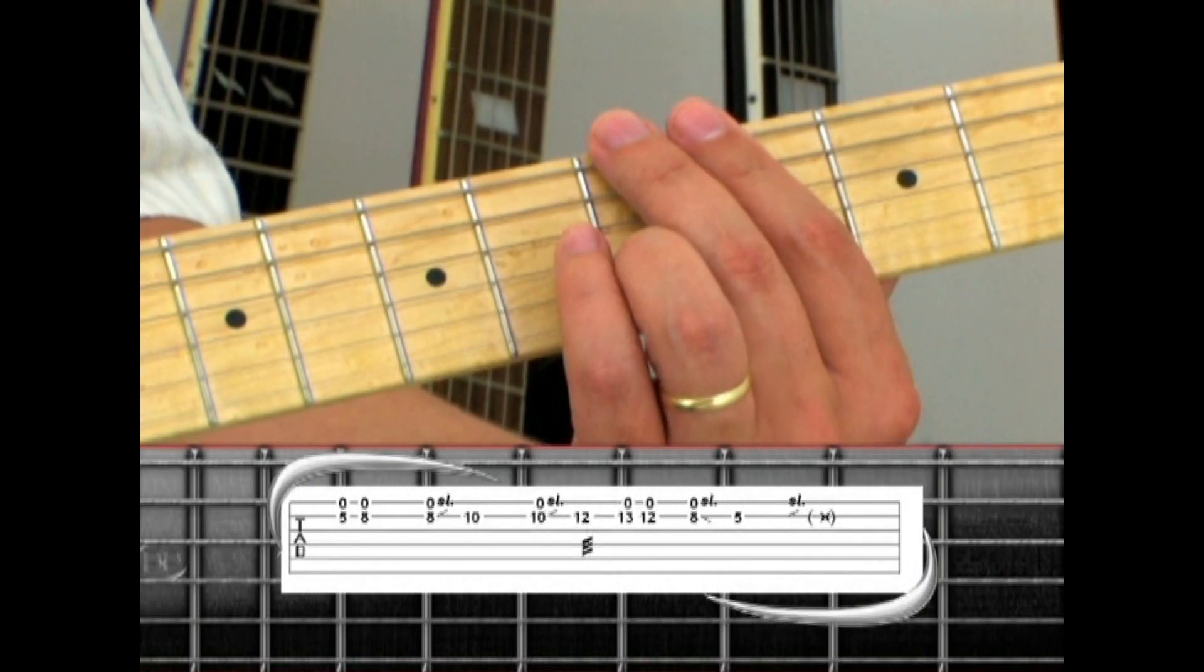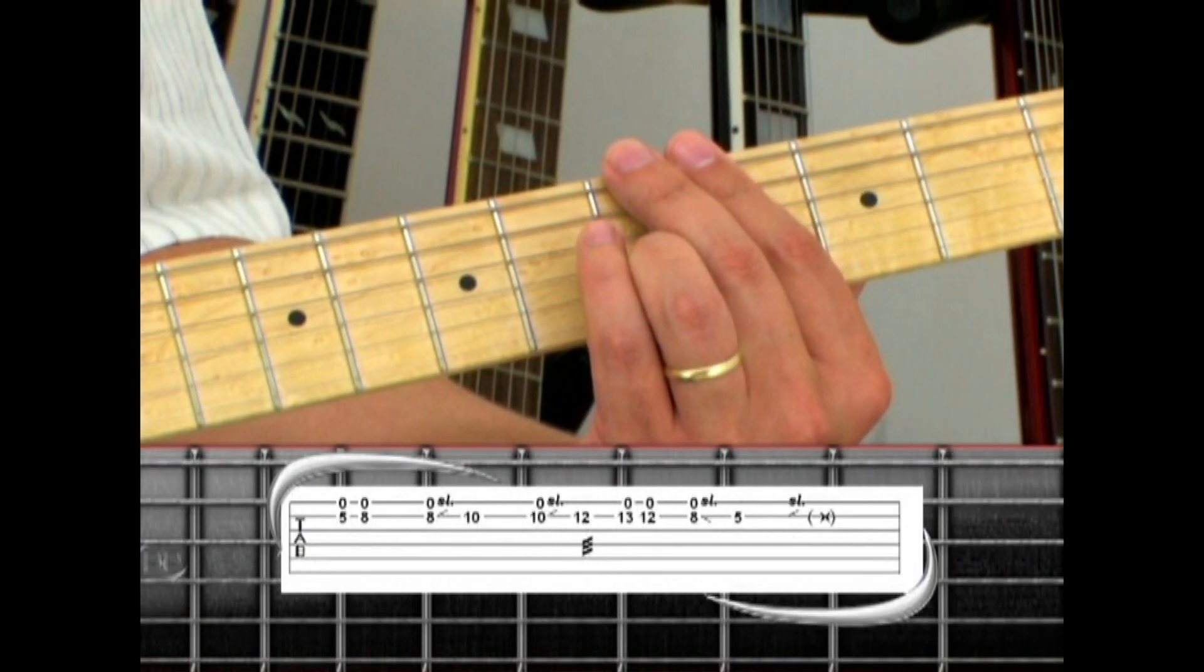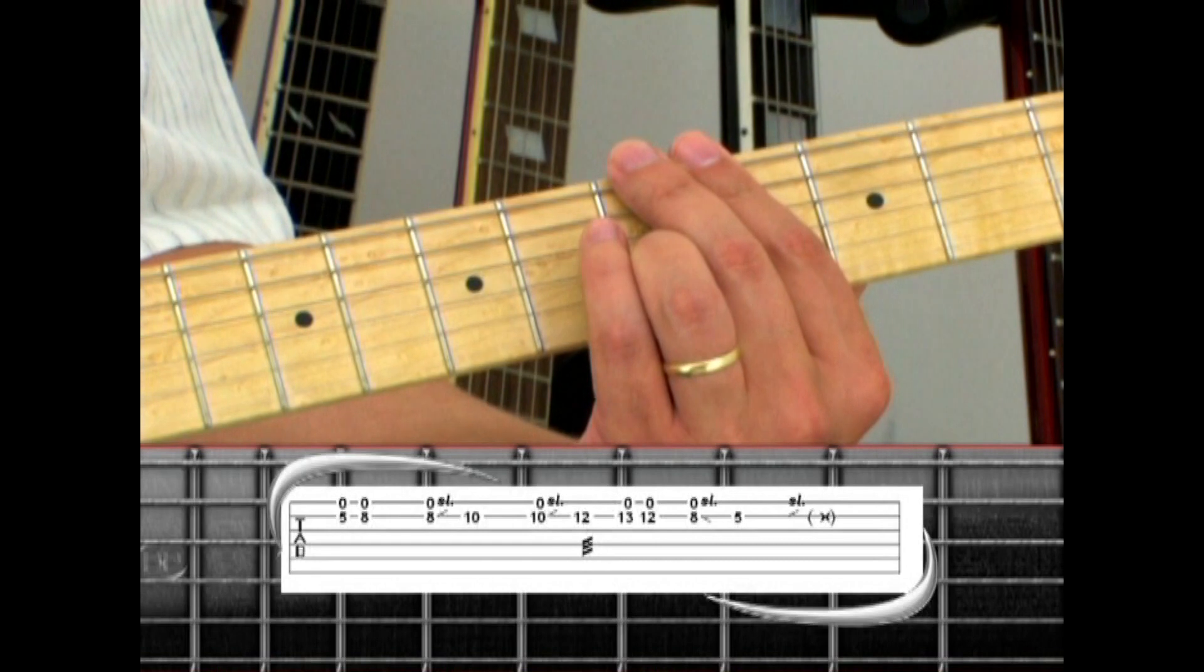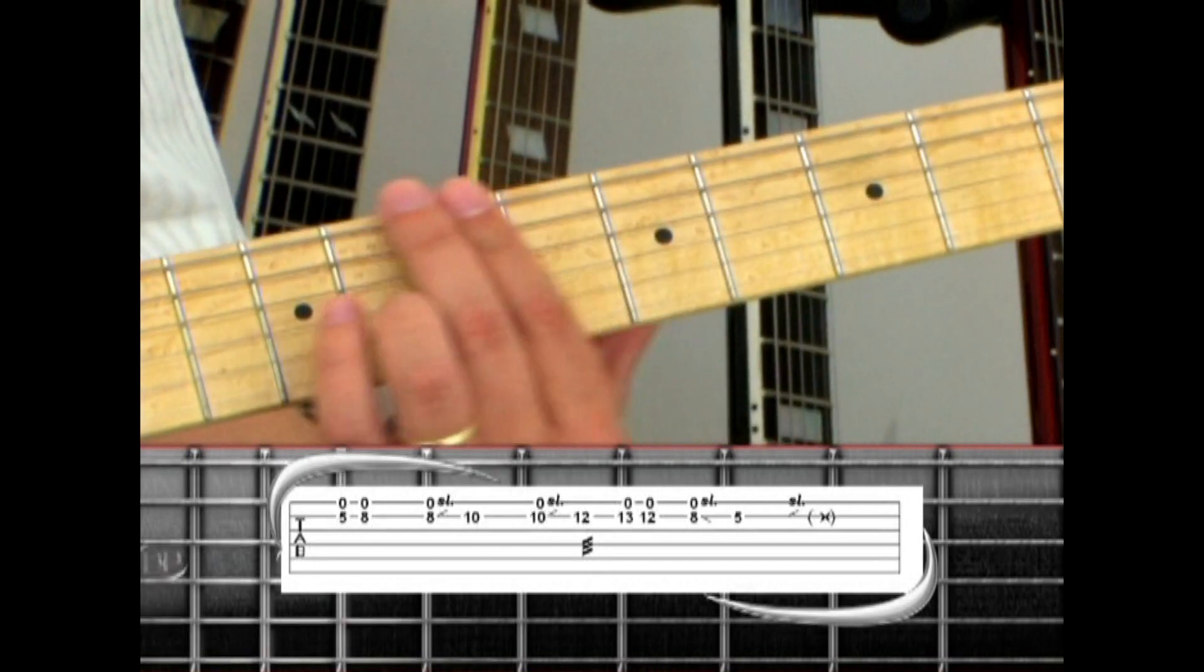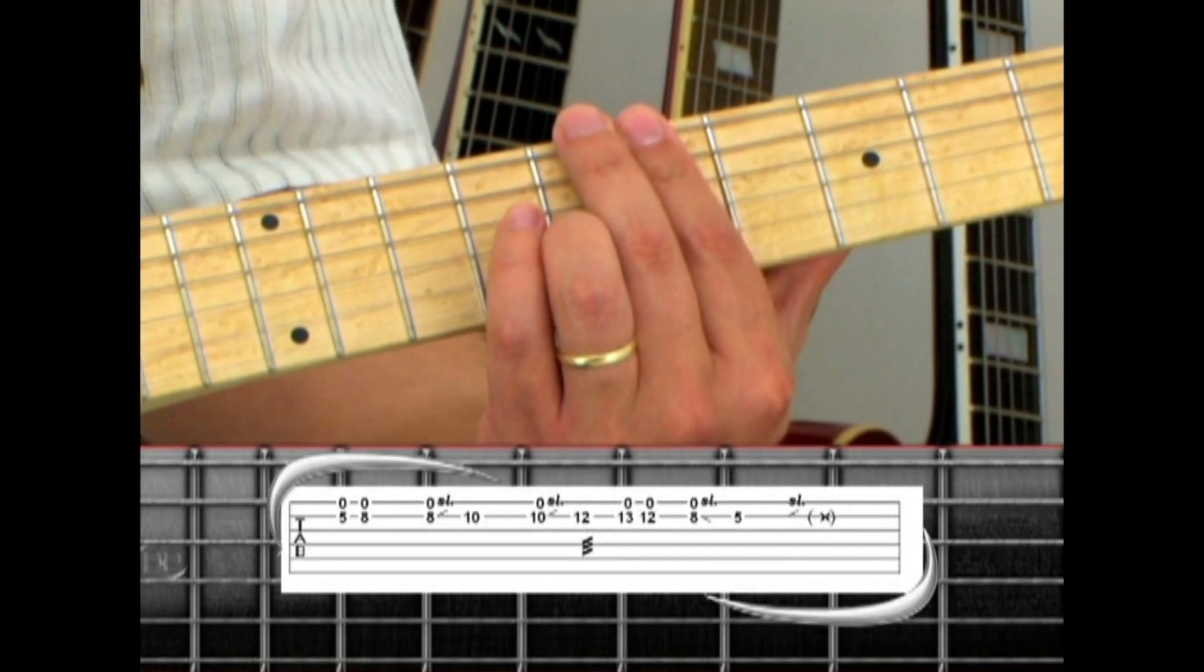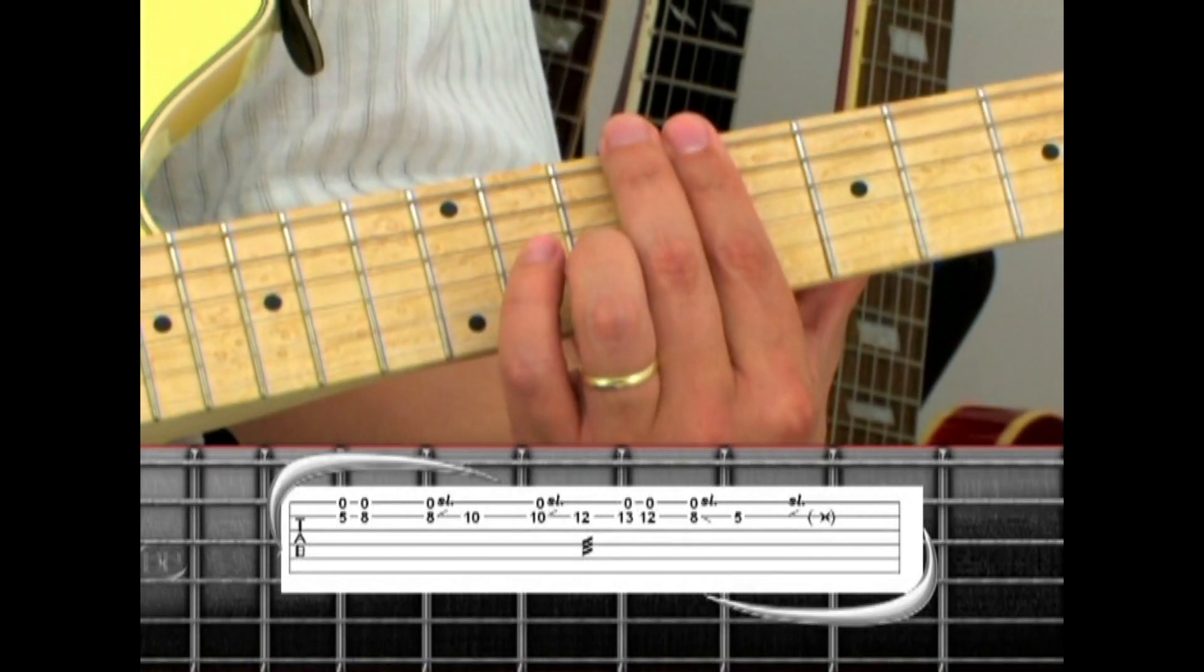Phrase five starts out with the same second string fifth fret with open first string drone note. Move up to eight, eight again and slide to ten. Pick ten, slide to twelve.